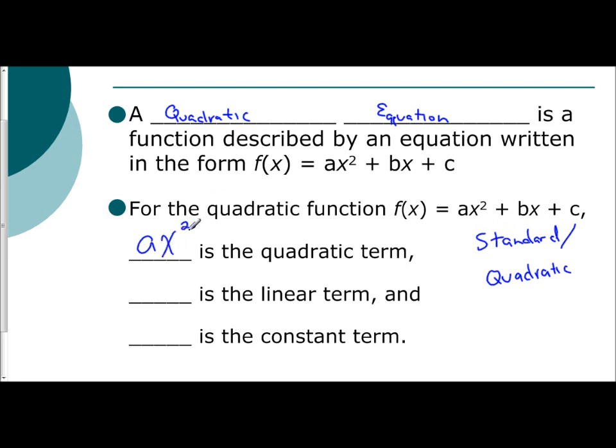We call it the quadratic term because it has the exponent of 2, it's squared. Now bx, we learn that anything with an x with an exponent of 1 is linear. And so we call bx the linear term.